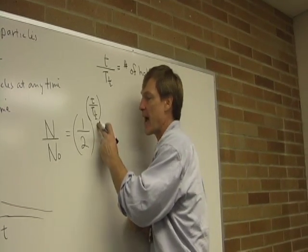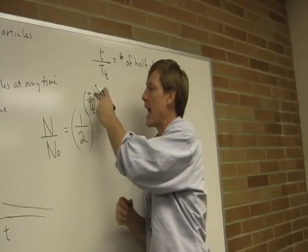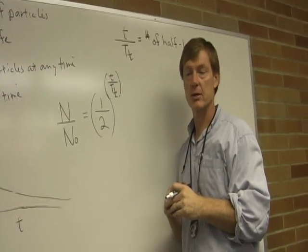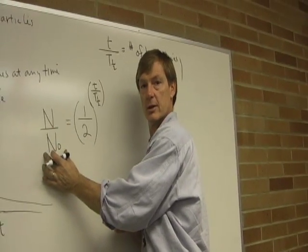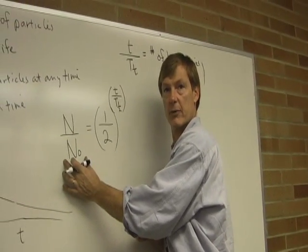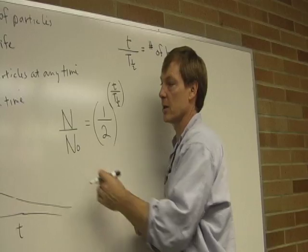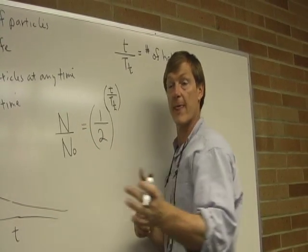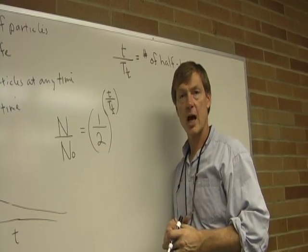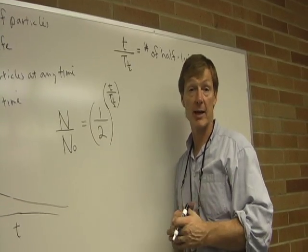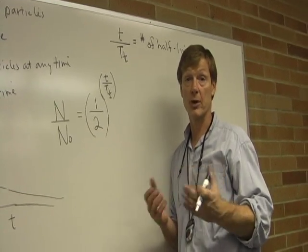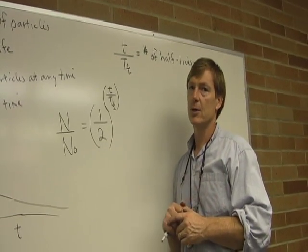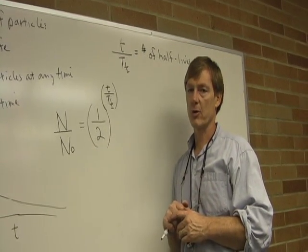So if I know that the half-life of material, and I know the time that it's been sitting there, I can determine the fraction of the original material that will be left. So I could solve for either the amount of material that's left, and if I had one of these, I could solve for the other. Now, I don't know how to solve for the time here. And mostly when you talk about radioactive dating, for example, people are always trying to figure out how old something is. What's the time? To do that, we need to take the log of both sides.